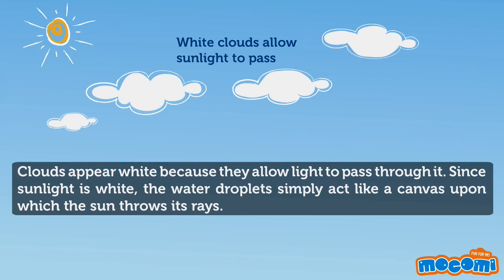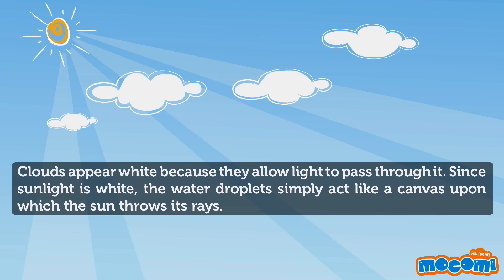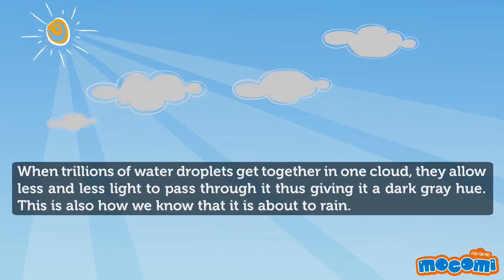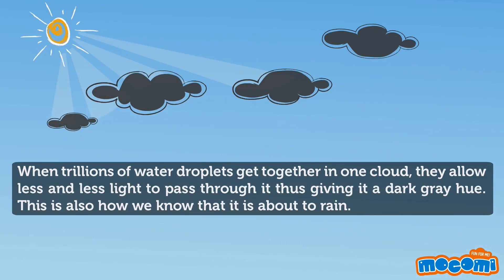White clouds allow sunlight to pass through them. Since sunlight is white, the water droplets simply act like a canvas upon which the sun throws its rays. When trillions of water droplets get together in one cloud, they allow less and less light to pass through it, thus giving it a dark grey hue. This is also how we know that it is about to rain.